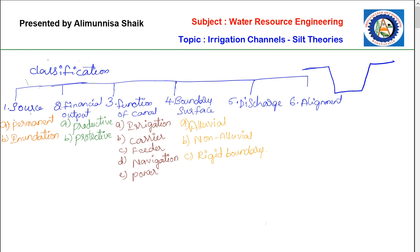Classification of canals based on boundary surfaces is sub-classified into three types: alluvial, non-alluvial, and rigid boundary. An alluvial canal is one constructed on silty soil — it is excavated in alluvial soil. A non-alluvial canal is one excavated in low clay, hard soil, or murram — when a canal is excavated in such soil it is called a non-alluvial canal.